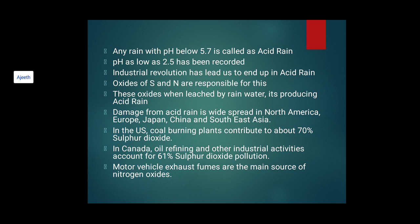These oxides, when leached by rainwater, produce acid rain. The nitrogen and sulfur oxides react with water, forming acid rain. Due to pollution, harmful gases go up into the atmosphere, but during monsoon they come back to earth mixed with water, becoming acid rain. Damage from acid rain is widespread in North America, Europe, Japan, China, and Southeast Asia.